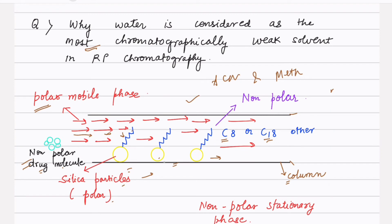The nonpolar drug molecule elutes later compared to when the polarity of the mobile phase is decreased by adding ACN or methanol. When the percentage of water in our mobile phase is more, the polarity is more, and this polar nature pushes the nonpolar drug molecule toward the stationary phase, causing the peak to elute later and sometimes causing tailing of the peaks.